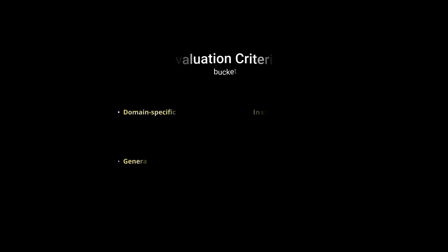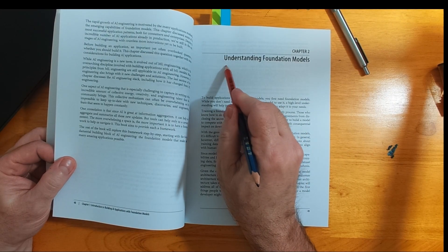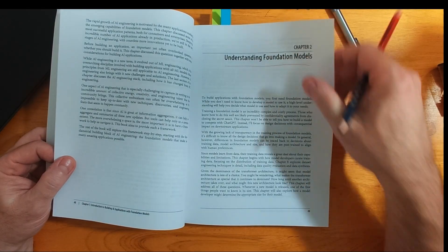Chip identifies four buckets for evaluation criteria: domain-specific capability, generation capability, instruction-following capability, cost, and latency. She examines those criteria in the next 17 pages.